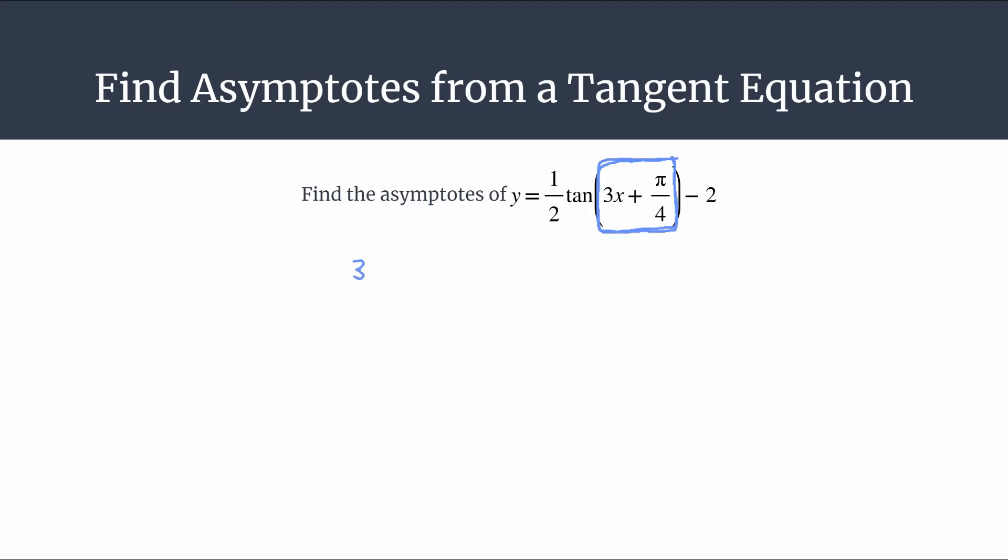So we take 3x plus pi over 4 and set them equal to pi over 2 plus pi k, where k is an integer. Now we need to solve for x.